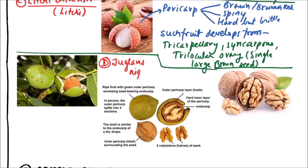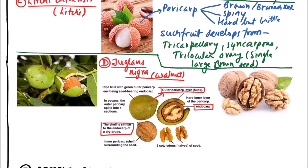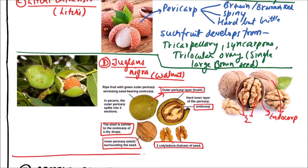Juglans nigra, that is walnut. In walnut, this is the outer pericarp which is husk-like. This one is the endocarp — the shell — and it contains two cotyledons of the seed. This is showing the outermost covering of endocarp. So this is walnut.